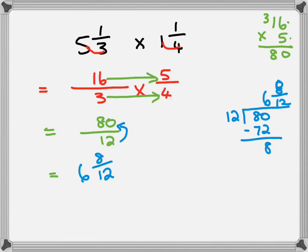And we're going to reduce this a little bit further down. Because we can see they do share common factors. We're going to divide them both by 4. So it's going to end up in 6 and 8 divided by 4 is 2, 12 divided by 4 is 3. 6 and 2 thirds.